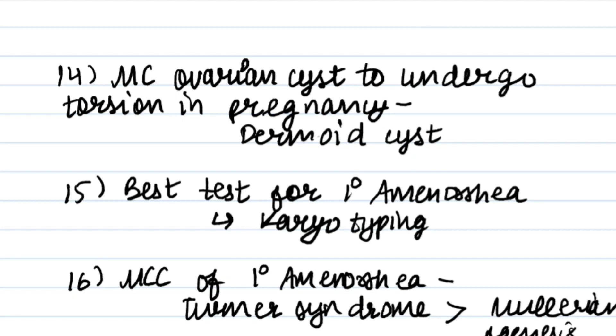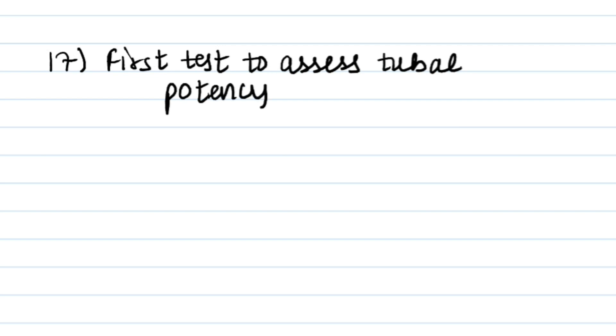Turner syndrome is 45 XO and Müllerian agenesis is 46 XX. Next point: the first test to assess tubal patency is HSG (hysterosalpingography).